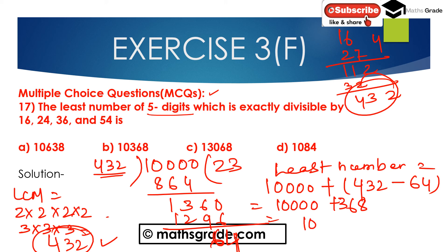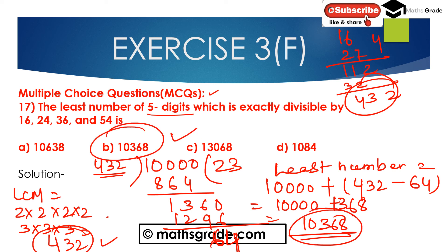The answer is 10,368. Option B, that is 10,368, is the least number of 5 digits which is exactly divisible by 16, 24, 36 and 54. So 10,368 is the correct answer.